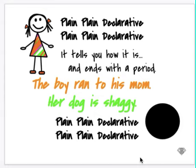Hey boys and girls, today we're going to talk about writing sentences. There are four different types of sentences. One sentence is what we call a declarative sentence. And to introduce the declarative sentence today, I have a song.